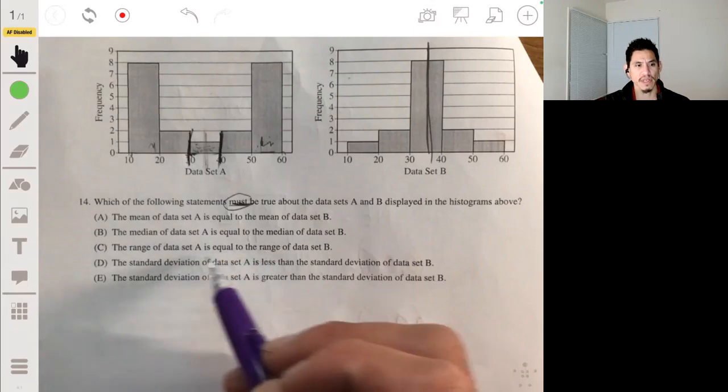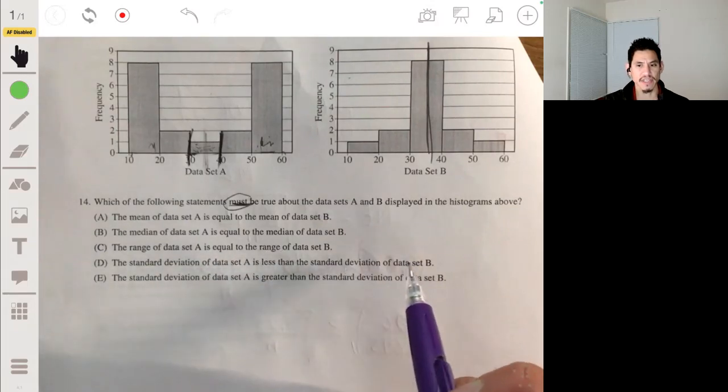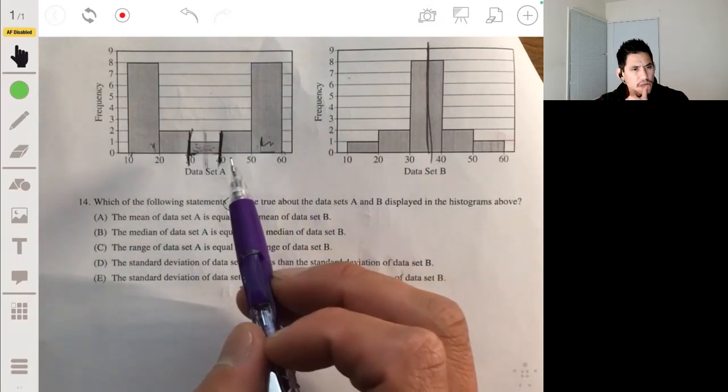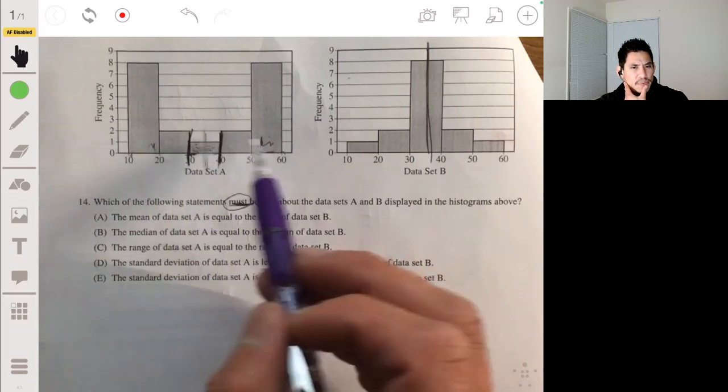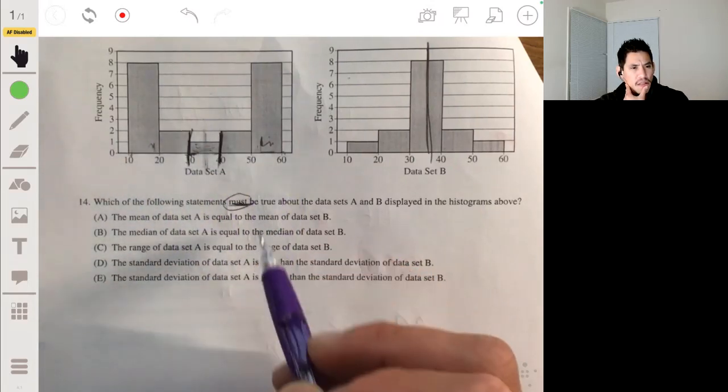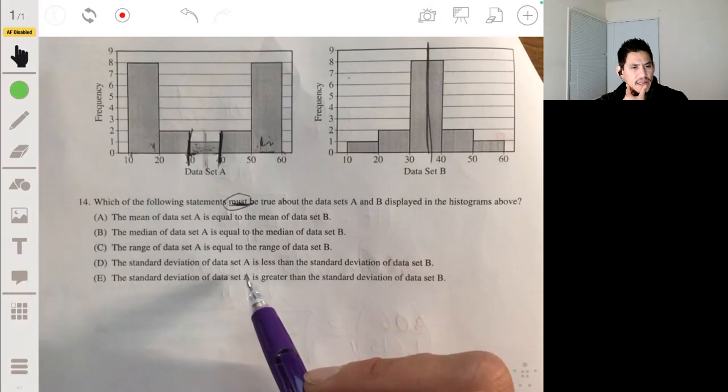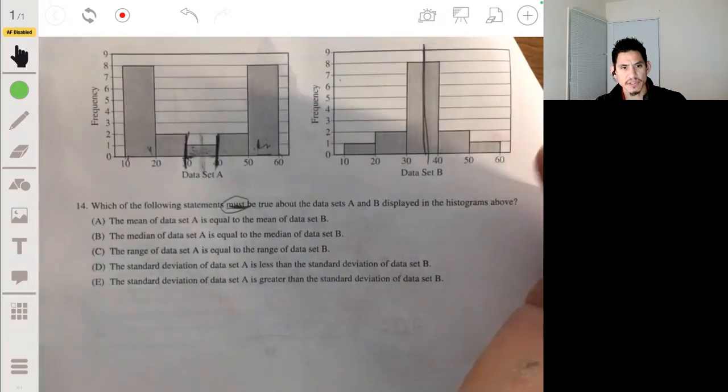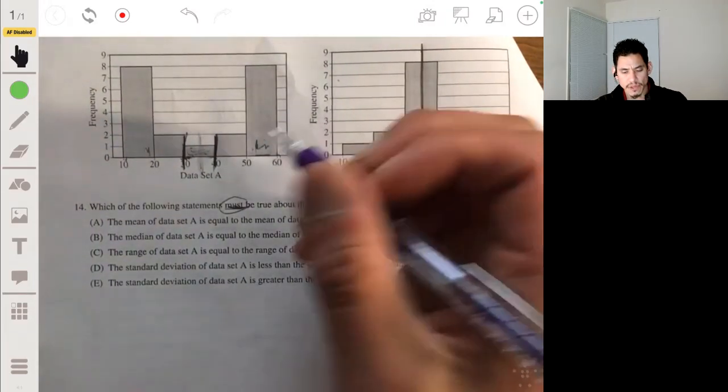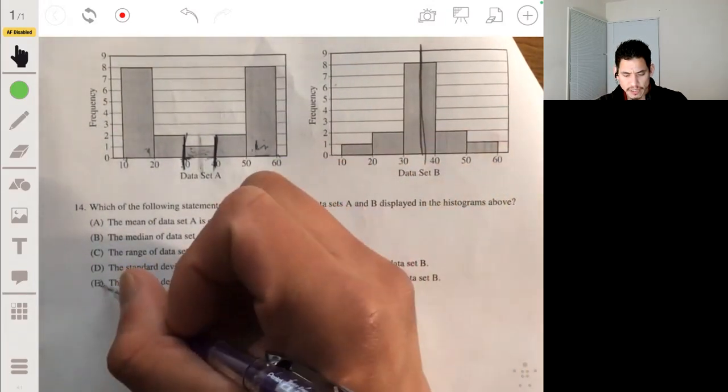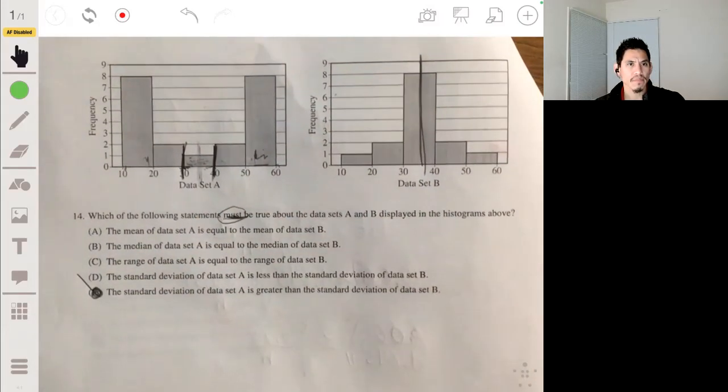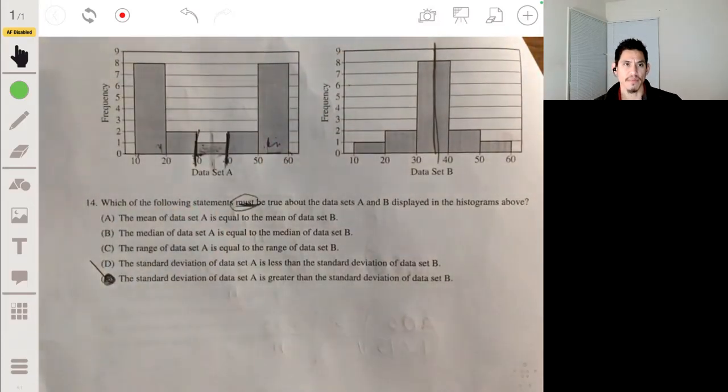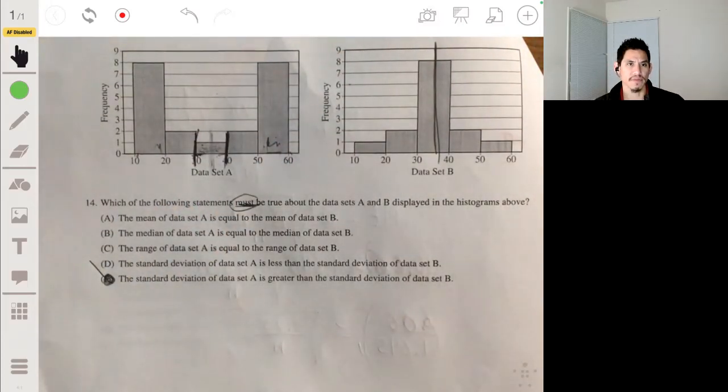So not C, the standard deviation of data set A is less than the standard deviation of data set B. No, it would actually be the opposite. Because this is more spread. And so that leads to E. Yeah. So it would actually be E because the standard deviation of data set A, this has more variation. So it would actually be E. The answer would be E. That's the one we could say for sure. Because just because of how on this one is dense up in the middle there. So there's less variability. There's less variability there.